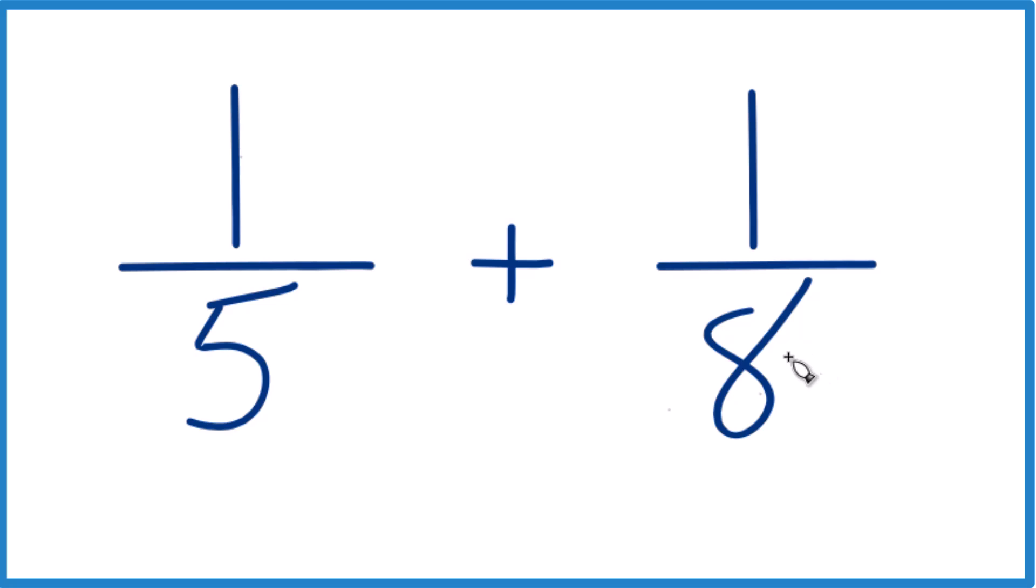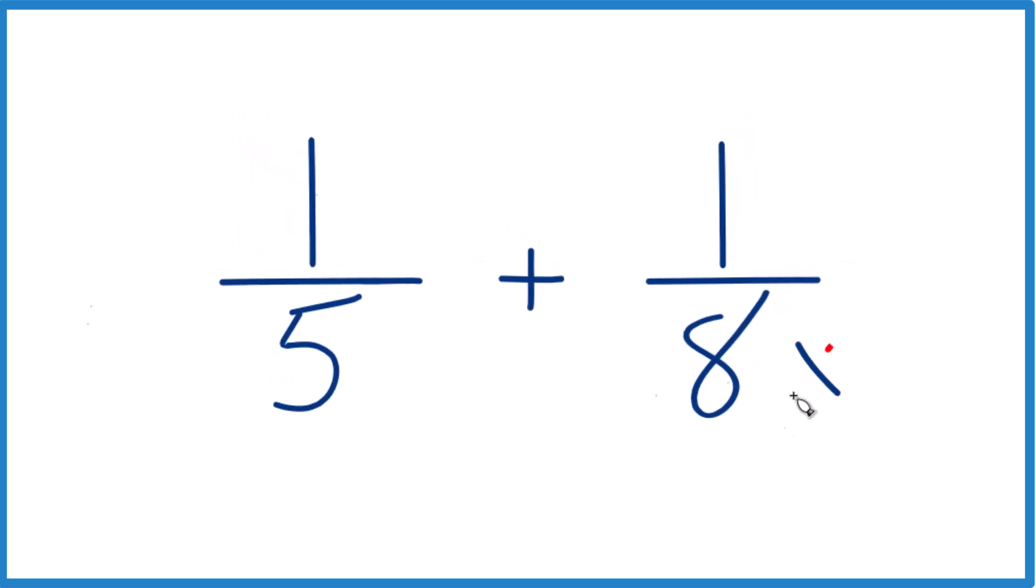Let's take 5 times 8, and then over here we'll have 8 times 5. So 8 times 5 equals 40. 5 times 8 equals 40 as well. So we'd have a common denominator.